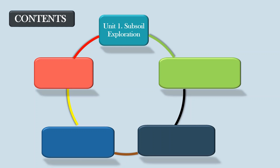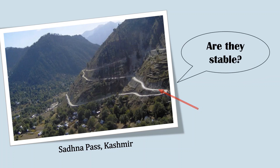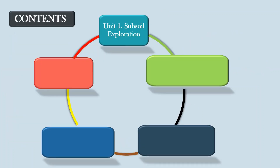Next, this is Sadhana Pass in Kashmir. Could you observe that those hilly roads are being made after disturbing existing natural slopes? Are they stable under all conditions? To find an answer for this question, just check out Unit 2 on Slope Stability Analysis.